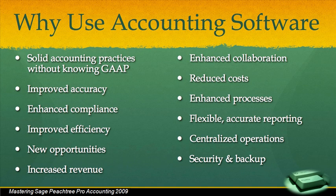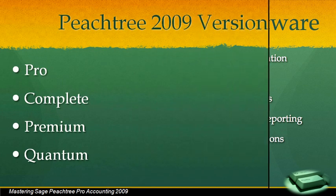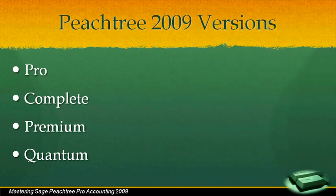So when you ask yourself why you want to move to an accounting software system, I think once you start to think about it, the answers are pretty obvious. Peachtree 2009 comes in several different versions: Pro or Professional, Complete, Premium, and Quantum.